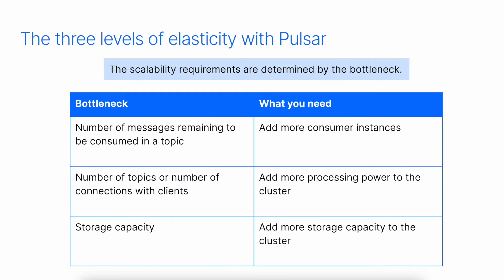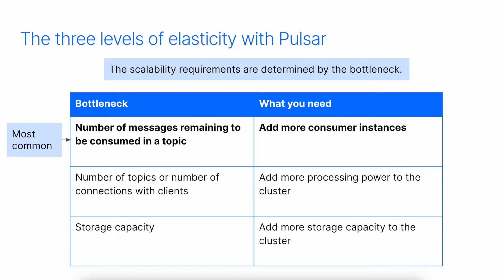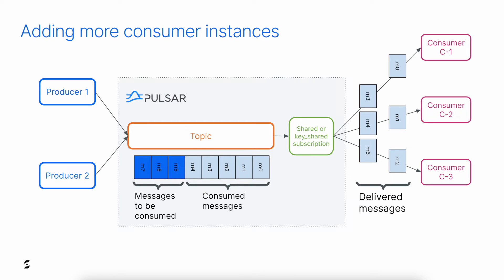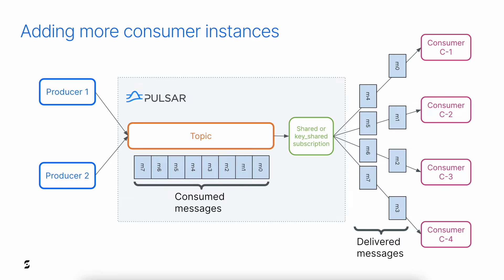If your bottleneck is the number of messages remaining to be consumed in a topic, then you need to add more consumer instances. When the bottleneck is the number of topics or the number of connections with clients, then you need to add more processing power to the Pulsar cluster. And when the bottleneck is the storage capacity, then you need to add more storage capacity to the Pulsar cluster. The bottleneck in data processing often lies with the consumer rather than the broker or the producer. The consumer not only needs to read the data but also process it, and this processing can be resource intensive, making it the common bottleneck.